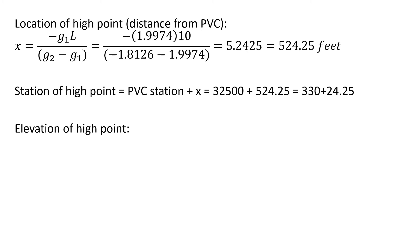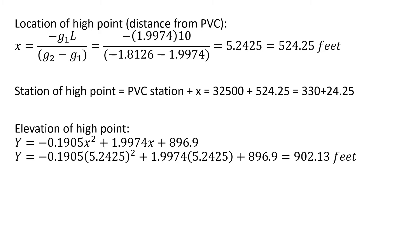The elevation of the high point can also be found by using our parabolic equation. We're going to plug in the X value 5.2425. Y equals negative 0.1905 times 5.2425 squared plus 1.9974 times 5.2425 plus 896.9. This gives us an elevation of the high point of 902.13 feet.